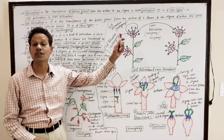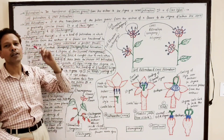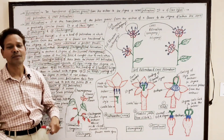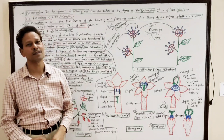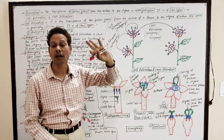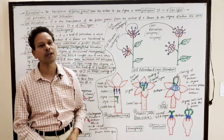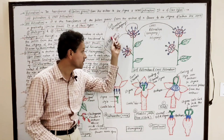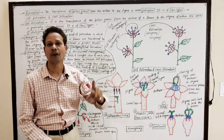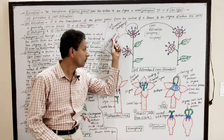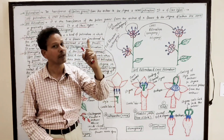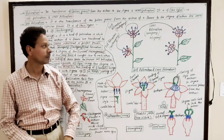Pollination has two types: self-pollination and cross-pollination. Self-pollination means transference of pollens from the anther to the stigma of a perfect, complete, intersexual or bisexual flower, as well as transference of pollens from anther to stigma of a different flower of the same plant or a different plant having the same genetic material.